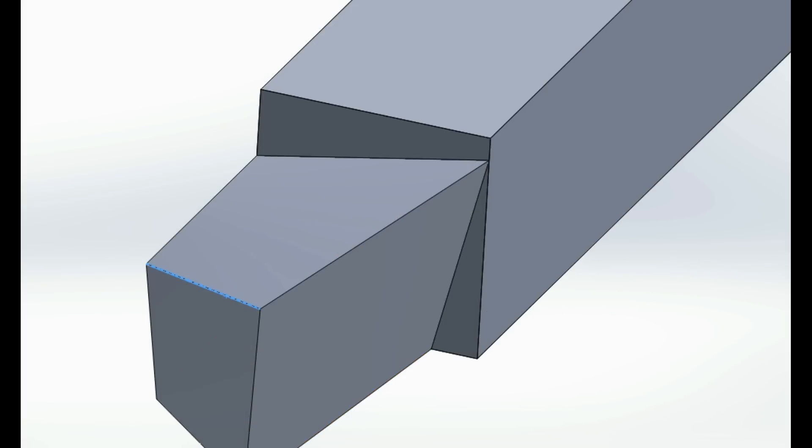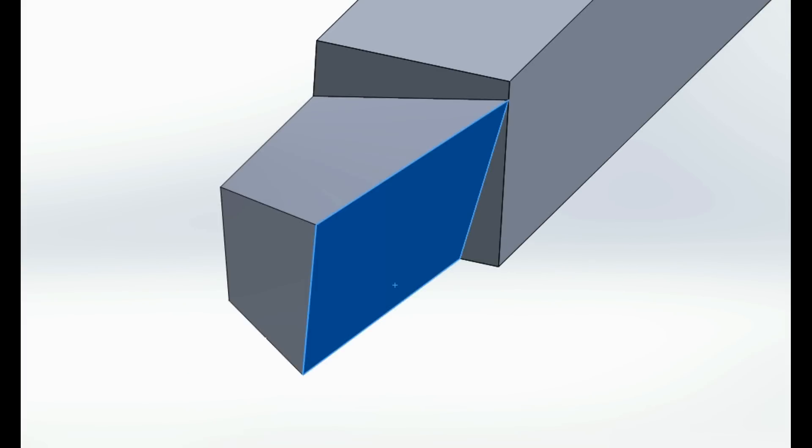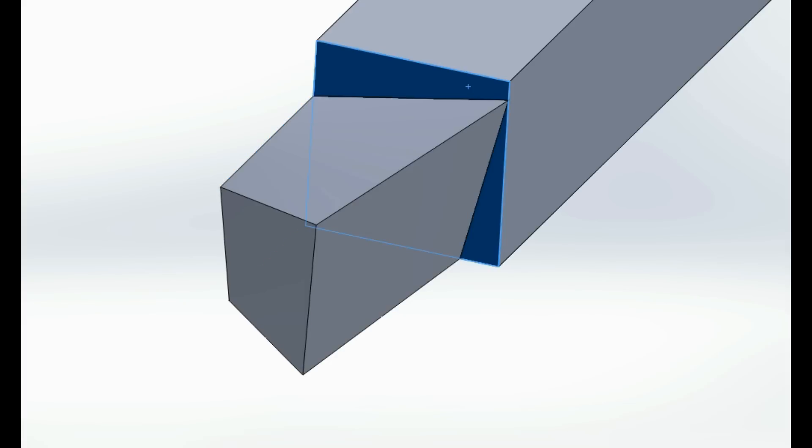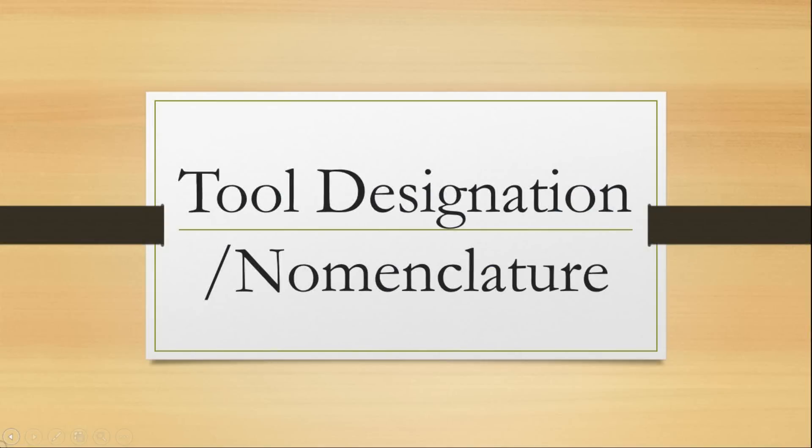This one is the auxiliary cutting edge. This face is called the principal flank, and this one is the auxiliary flank. This point is called the tool point or nose, where the two flanks and the rake face meet. This portion is called the heel. Geometry of a tool is defined by a set of seven parameters called tool designation or tool nomenclature.